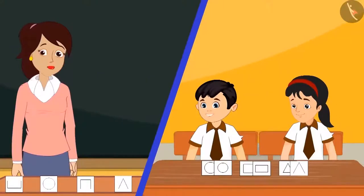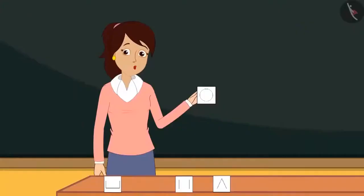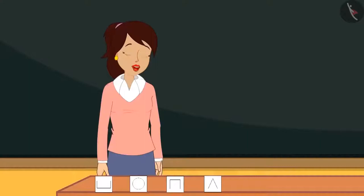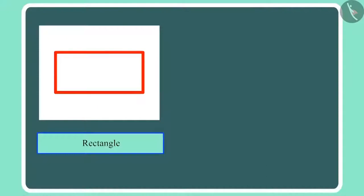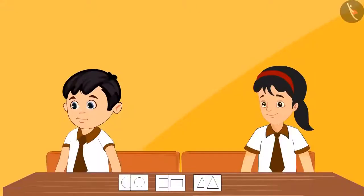Ma'am, we have sorted all the cards by looking at their shapes. Wow Chotu, wow Pinky — you have sorted these cards perfectly. This is a round-looking shape and we call it a circle. Isn't this also a circle? Yes Pinky, this is also a circle. And this shape is the rectangle. And we call it a square. Ma'am, what is the difference between square and rectangle? Both these shapes are made of four lines.